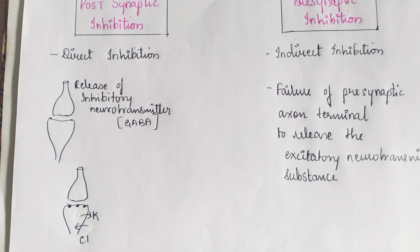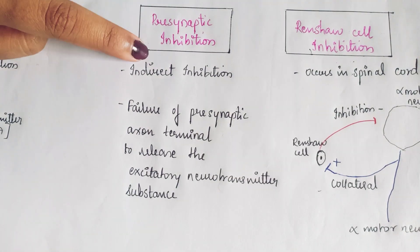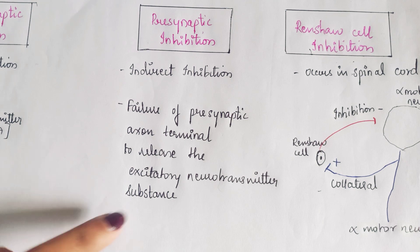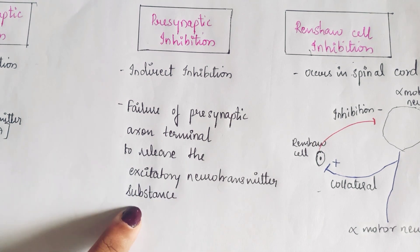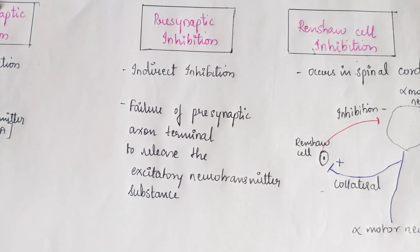Next, pre-synaptic inhibition, also called indirect inhibition, occurs because of failure of the presynaptic axon terminal to release the excitatory neurotransmitter substance — essentially, a failure of transmission.